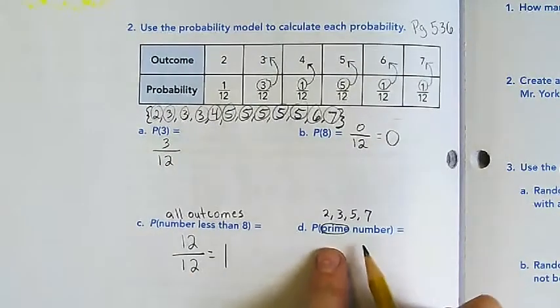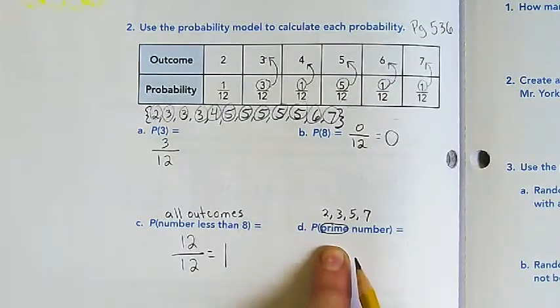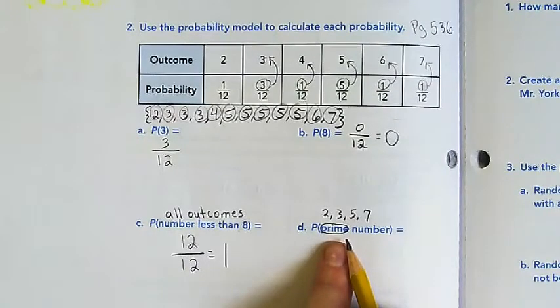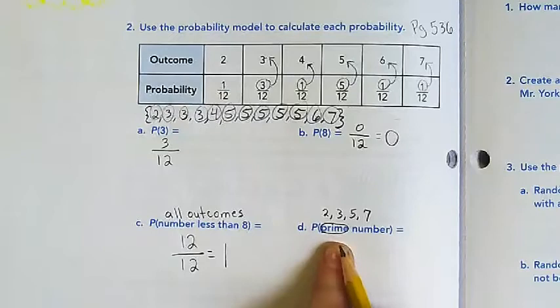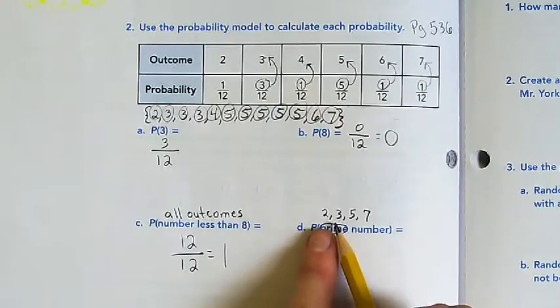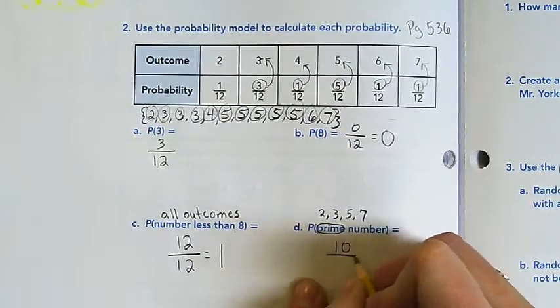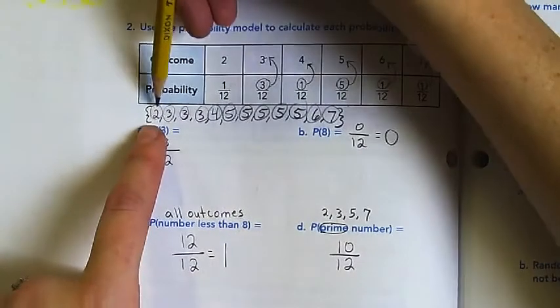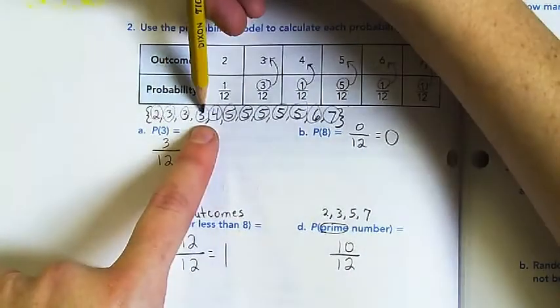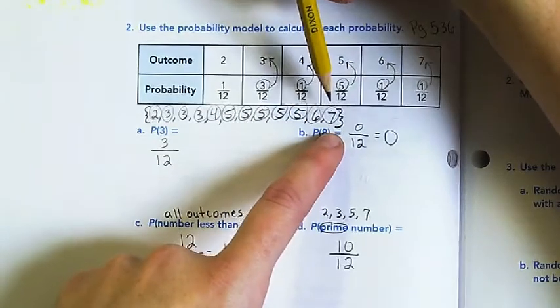Yesterday we started D. As a quick review, prime numbers are numbers that can only be divided by one and themselves - numbers that only have one times themselves as factors. Two, three, five, and seven are the outcomes in this experiment that are prime, and we get ten out of twelve. There's one, two, three threes, that's four; five fives, that's nine; and one seven makes ten.